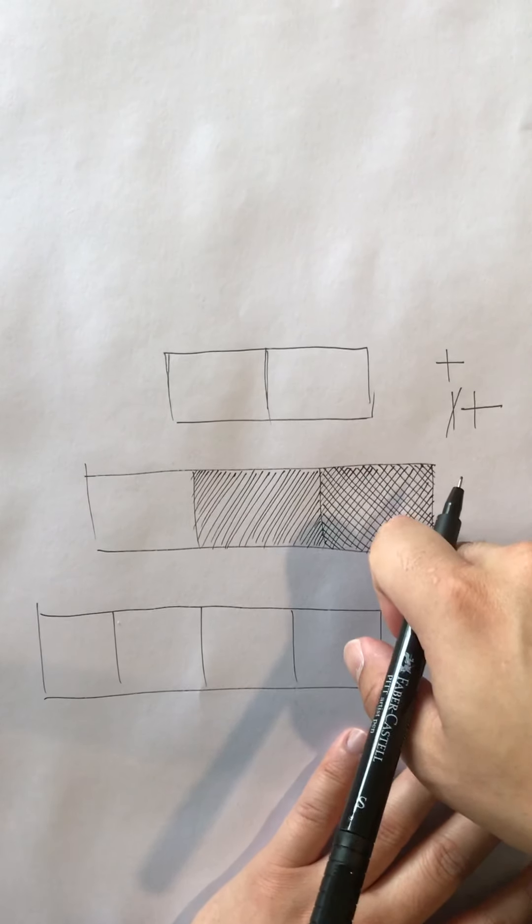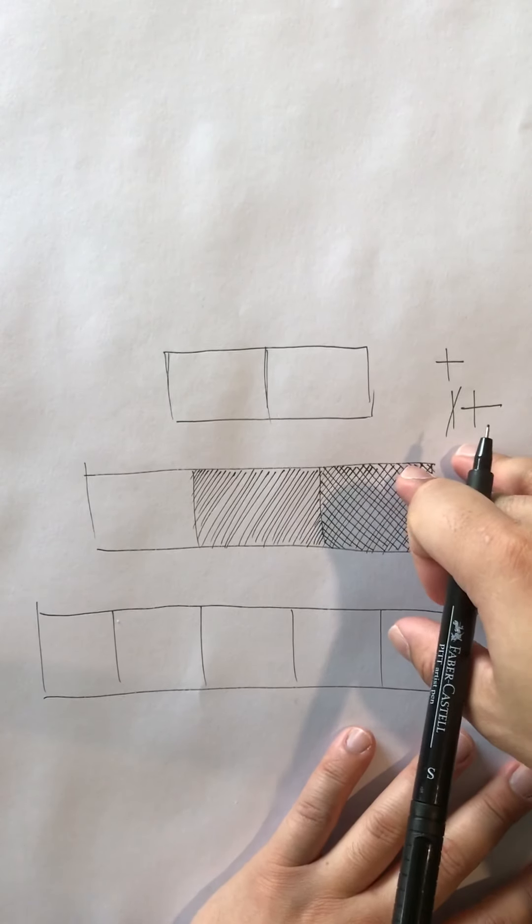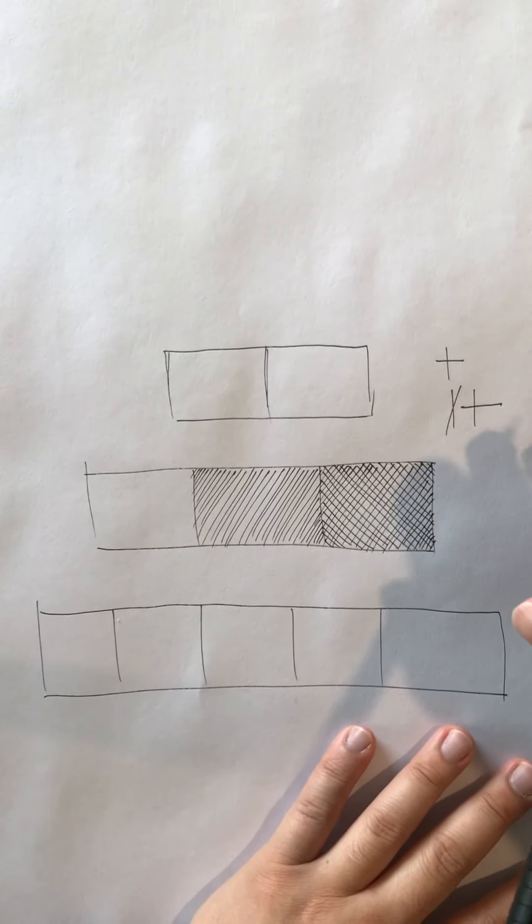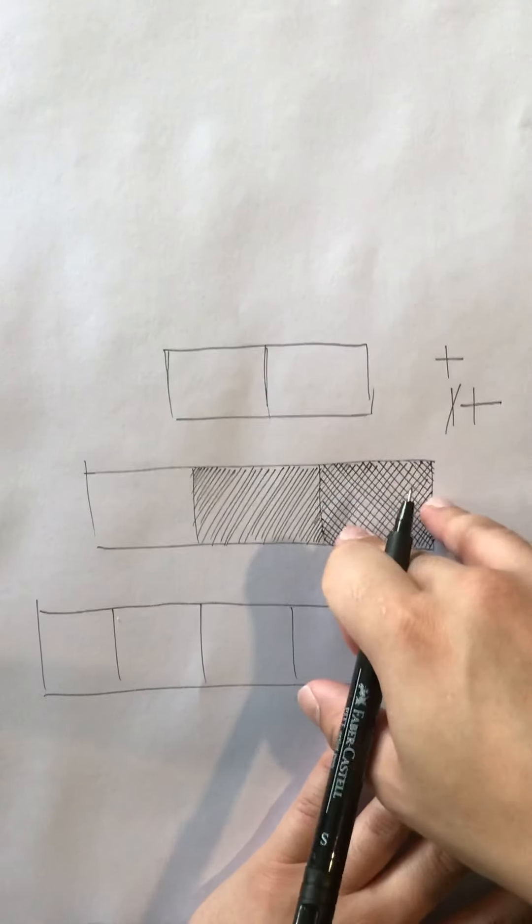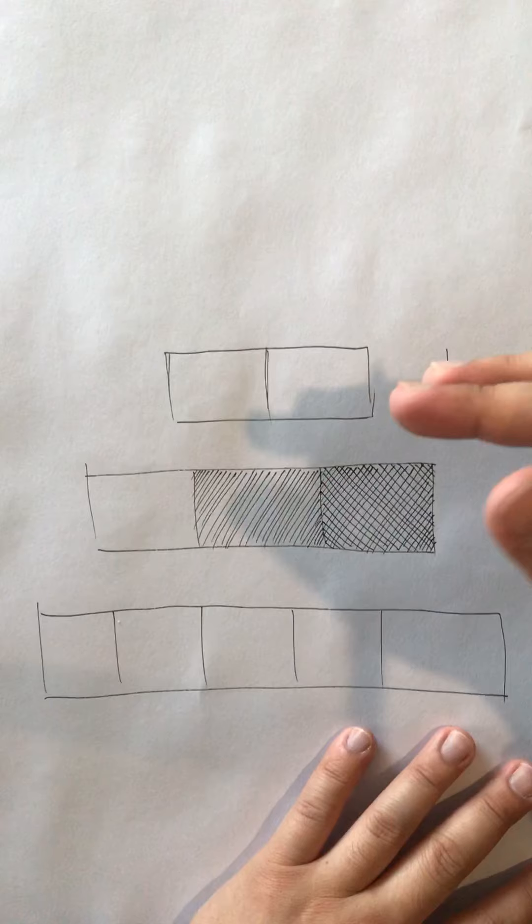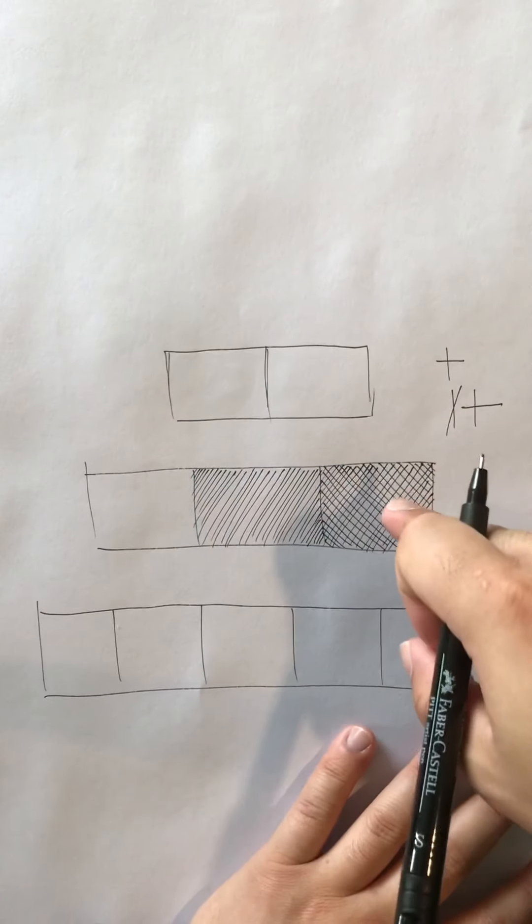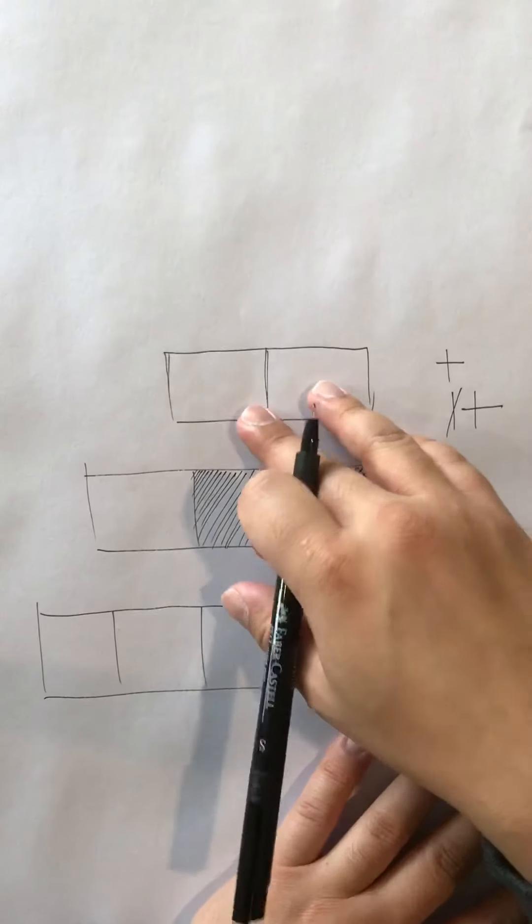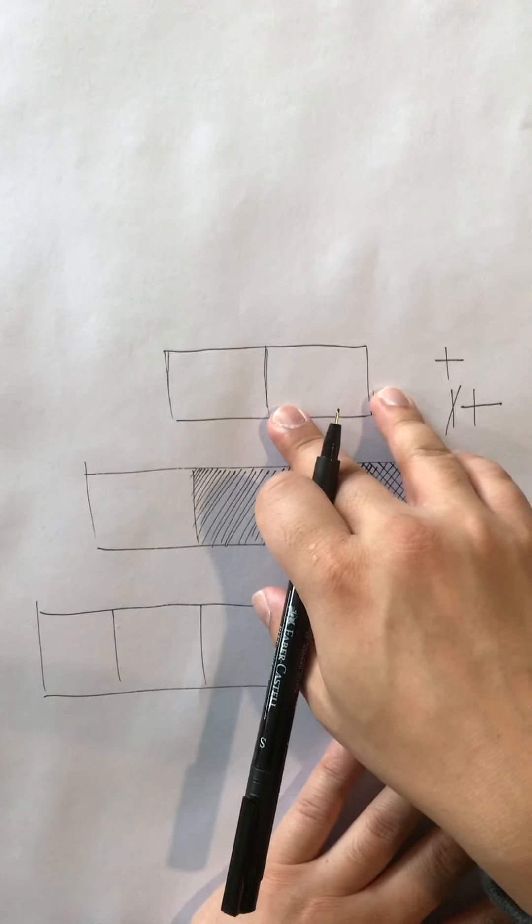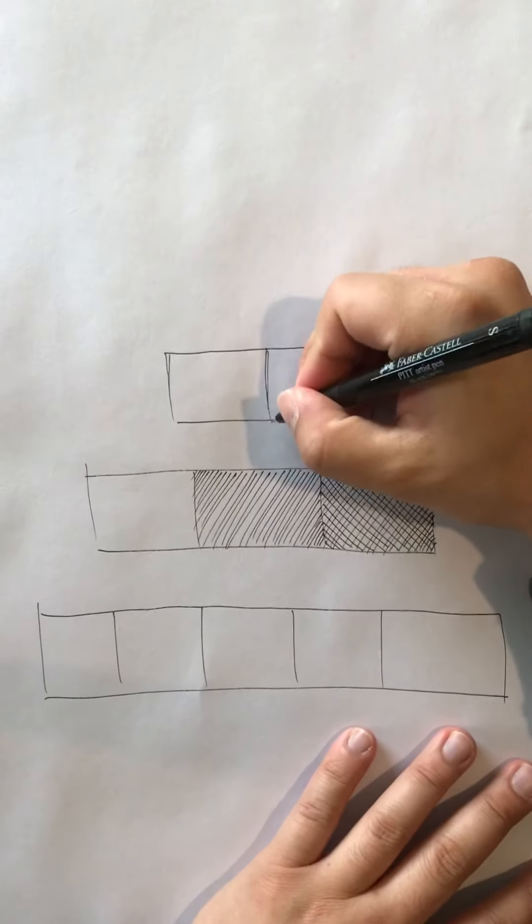This will be your first value of nothing, this will be a second value of something, and this will be a third value of super cross-hatched. You can actually blend using this method but we won't worry about that yet.